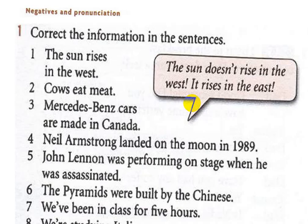We have negatives and pronunciation. You know that the pronouns he, she, it take 'is' and also take 'does'. The pronoun I takes 'am' and also takes the auxiliary verb 'do'. The pronouns we, they, and you take 'are' and take the auxiliary verb 'do'.